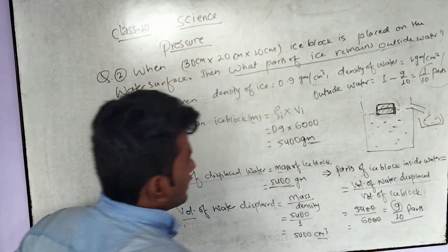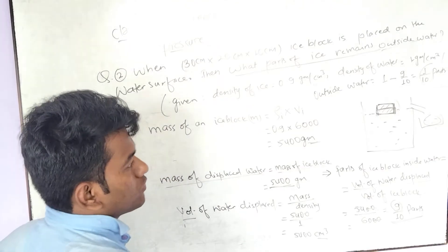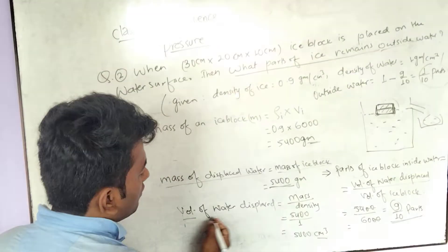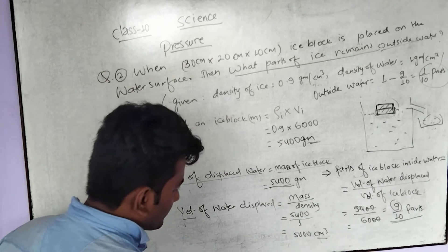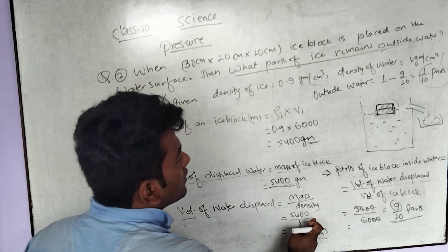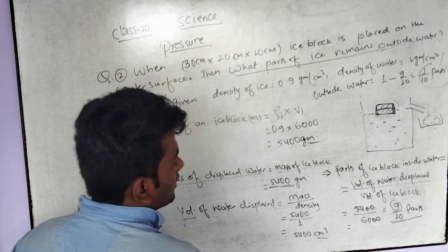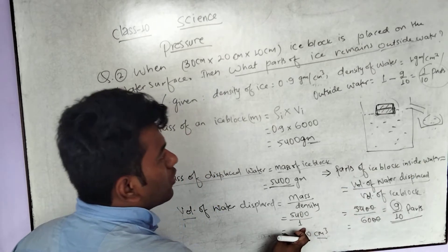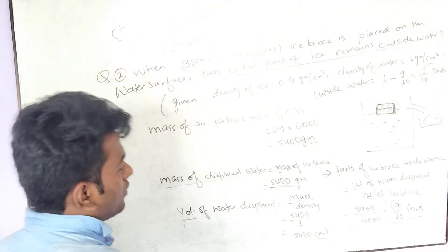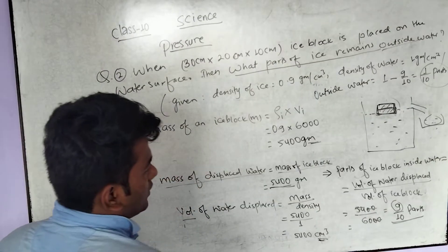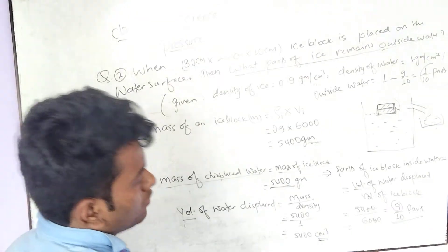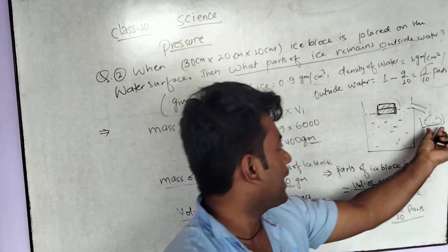Volume of the displaced water equals mass divided by density. So mass of the displaced water is 5400 grams, density of water is 1 gram per centimeter cube. So the volume of the displaced water is 5400 centimeter cube.